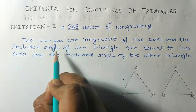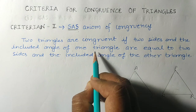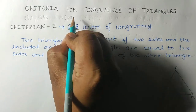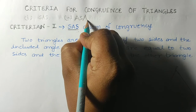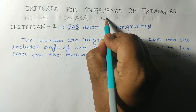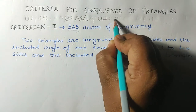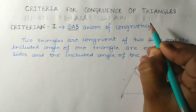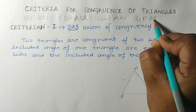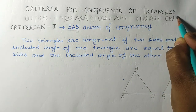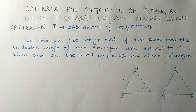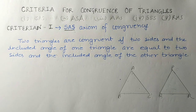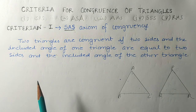The first criterion is Side-Angle-Side. The second is Angle-Side-Angle. The third is Angle-Angle-Side. The fourth is Side-Side-Side. And the fifth is Right Angle-Hypotenuse-Side. Basically, there are five criteria which we use to show that two triangles are congruent.